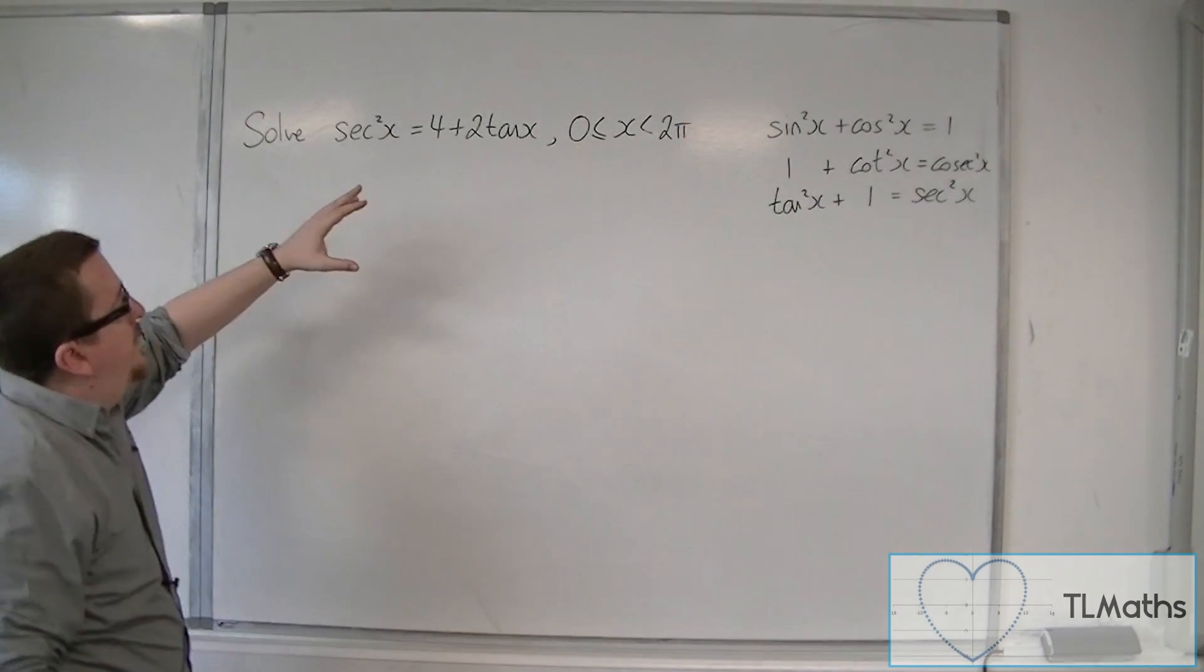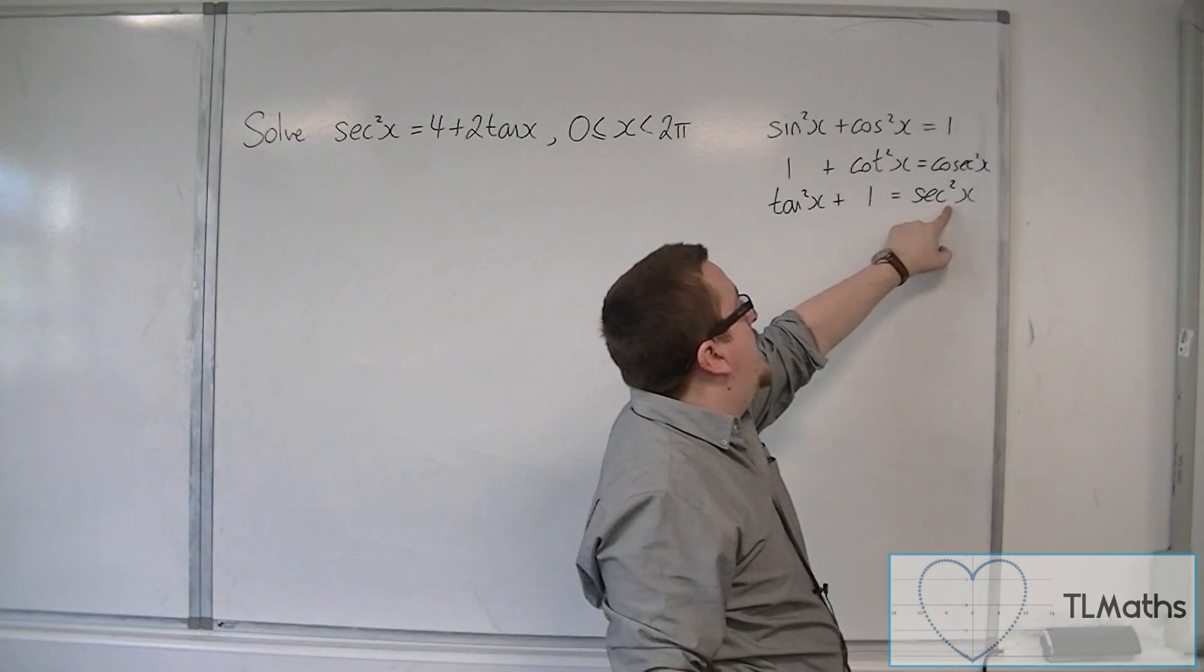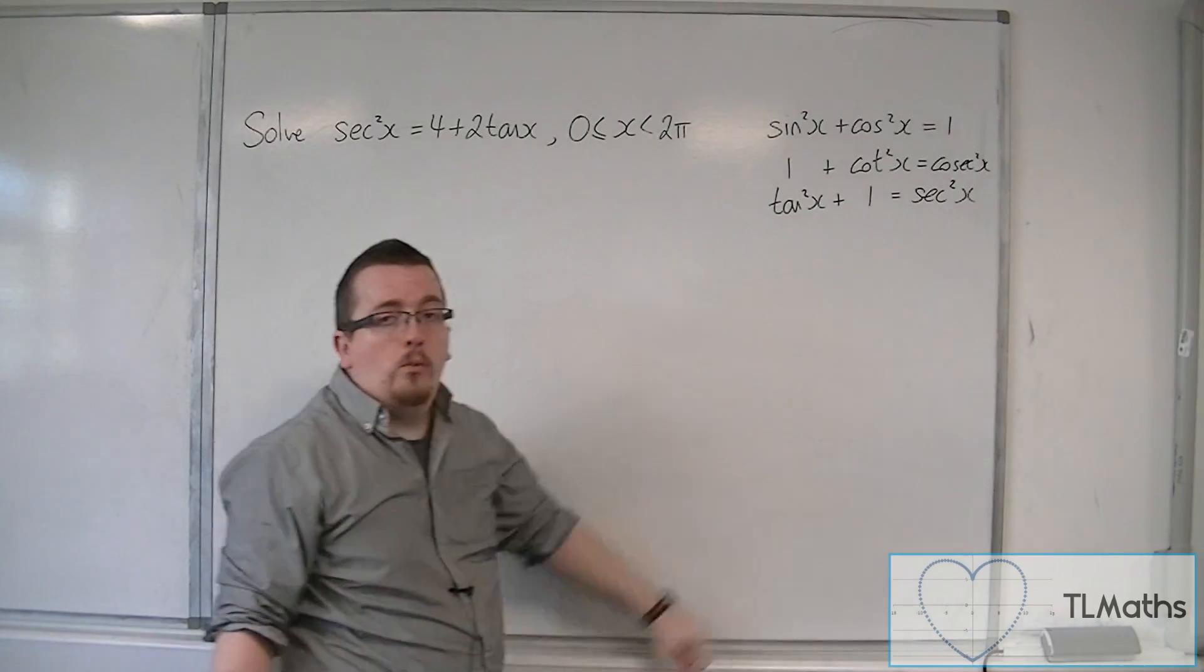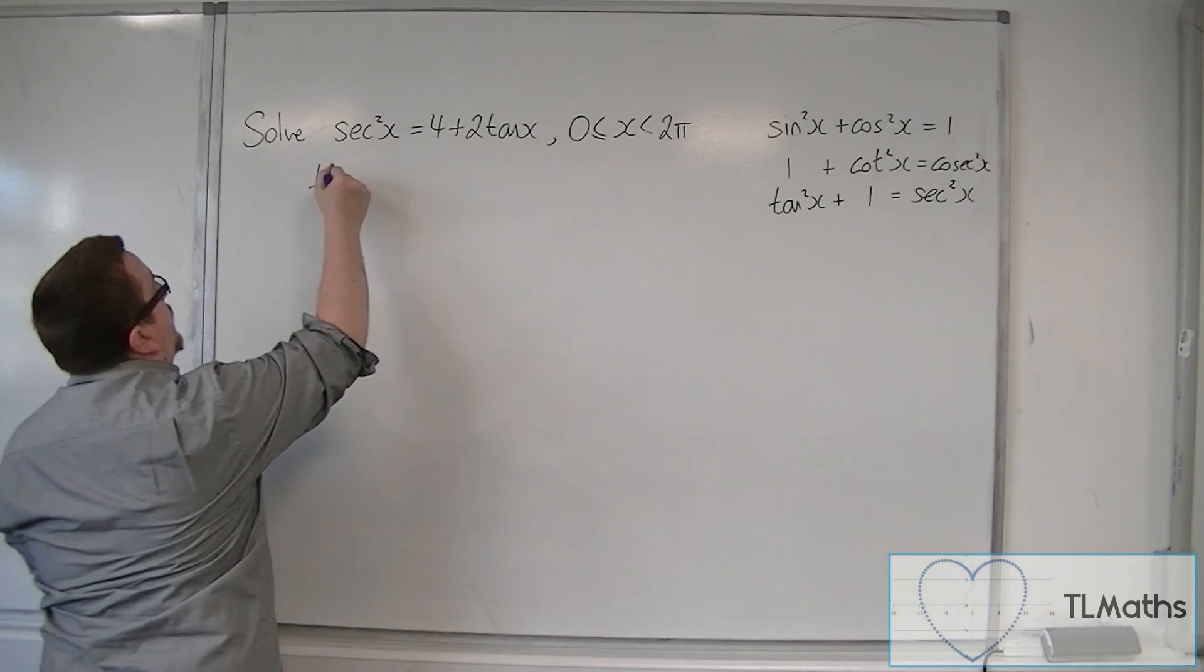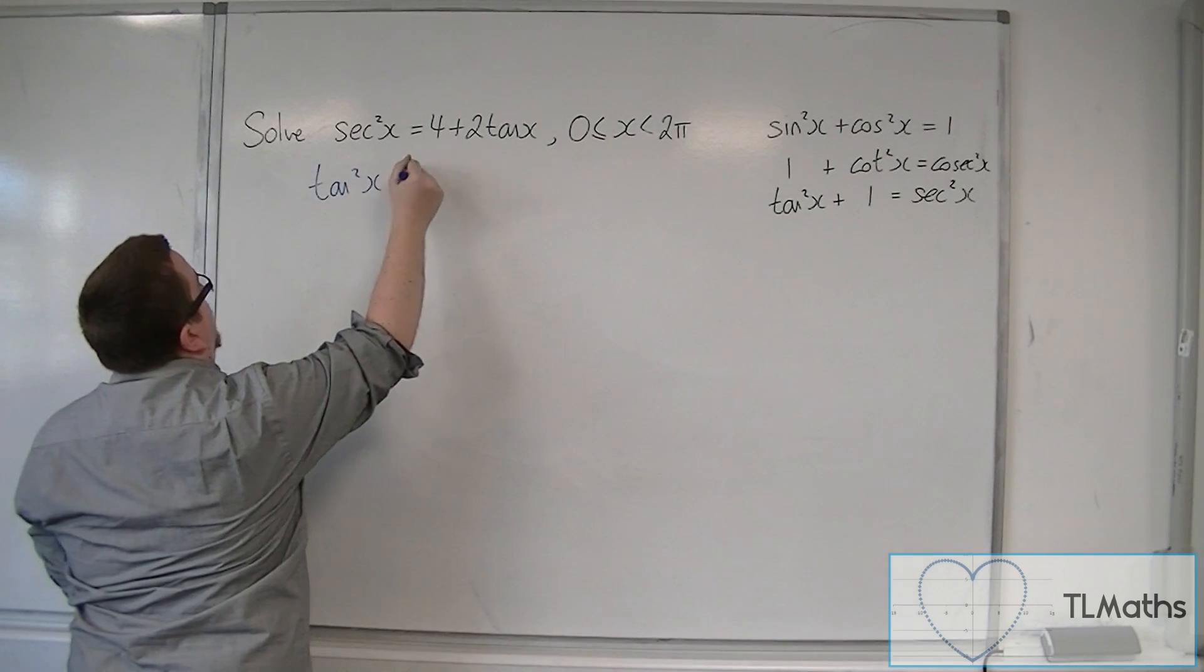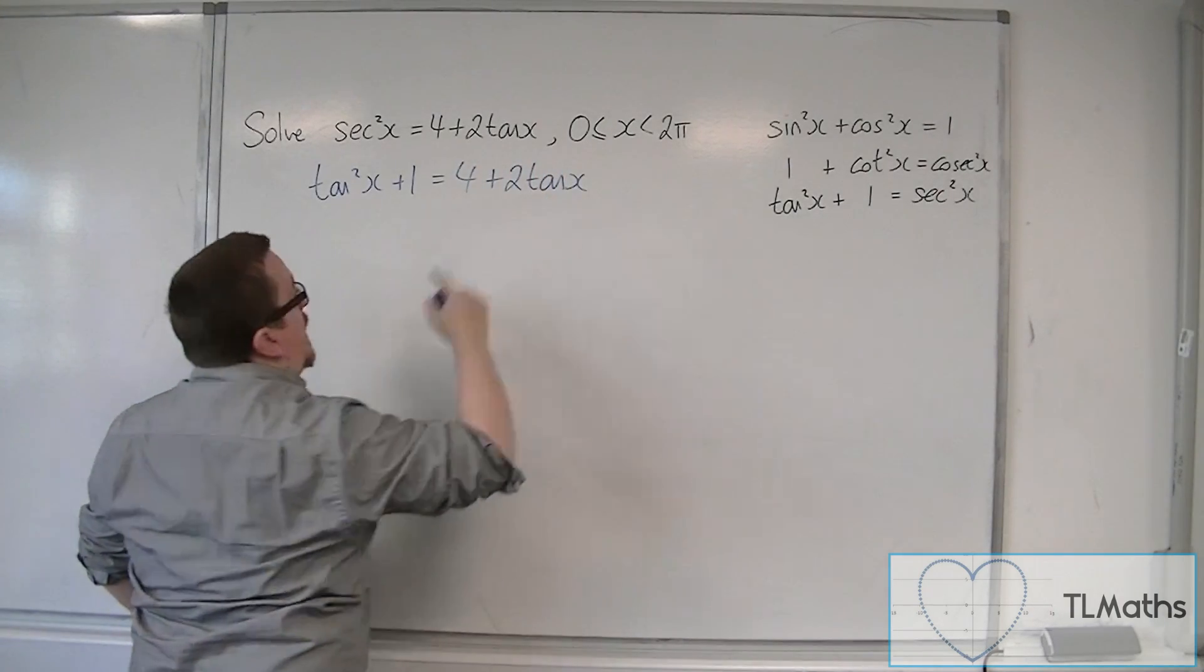So what we're going to do is we're going to look for sec squared. And sec squared, I can see here, is equal to tan squared plus 1. And so I can replace the sec squared with tan squared plus 1. And the right-hand side will remain the same.